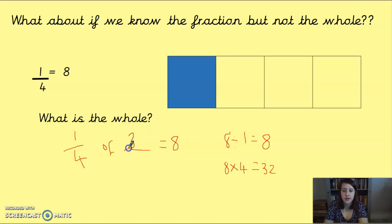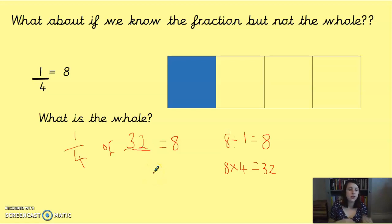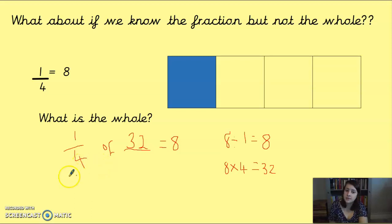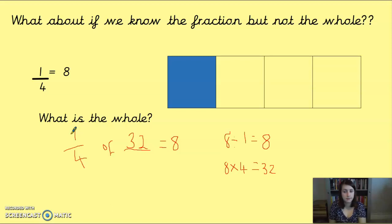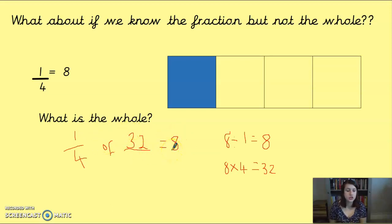One way to check your answer: put 32 in and do it the normal way around — 32 divided by four, then times that by one — and you should get eight. So you do everything backwards from the answer, working towards the start.